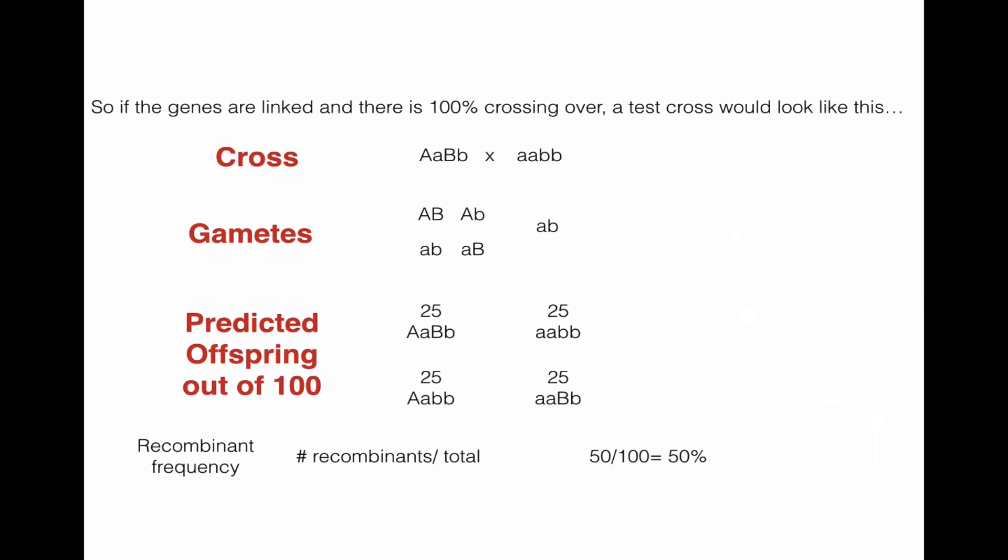Okay, so if the genes are linked and it's 100% crossing over, this is what you're going to end up with. You're going to get, just like we got before, the two parental, we have the two parental possibilities for gametes, plus we have two recombinant possibilities. And for this one, just like before, there's only one possibility. Now there's four ways you can combine these, and they're of equal probability. So we're going to get an equal probability of a parental, a parental, and a recombinant, and a recombinant. So we have 50 recombinants out of 100 offspring, so we've got 50% crossing over.